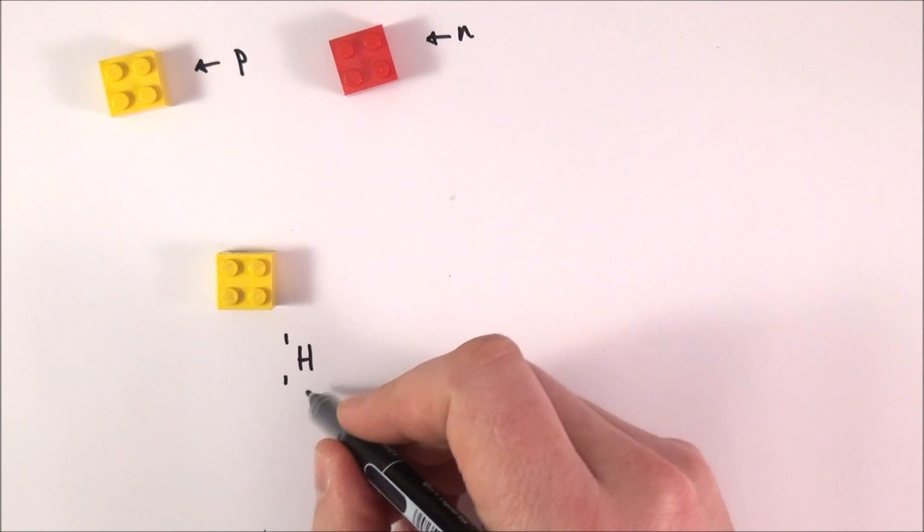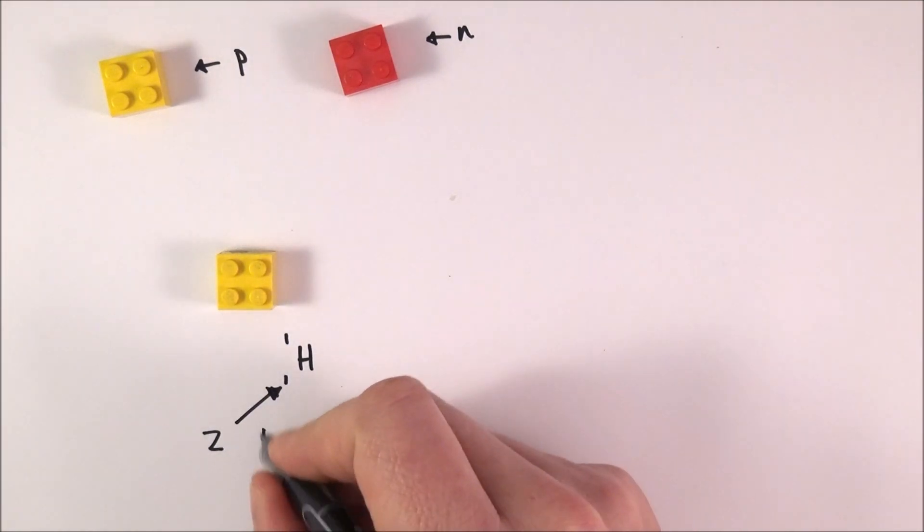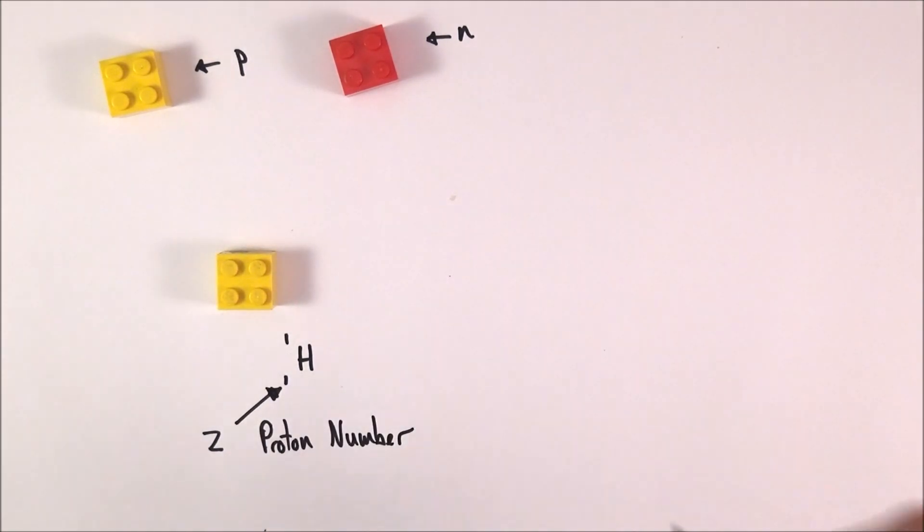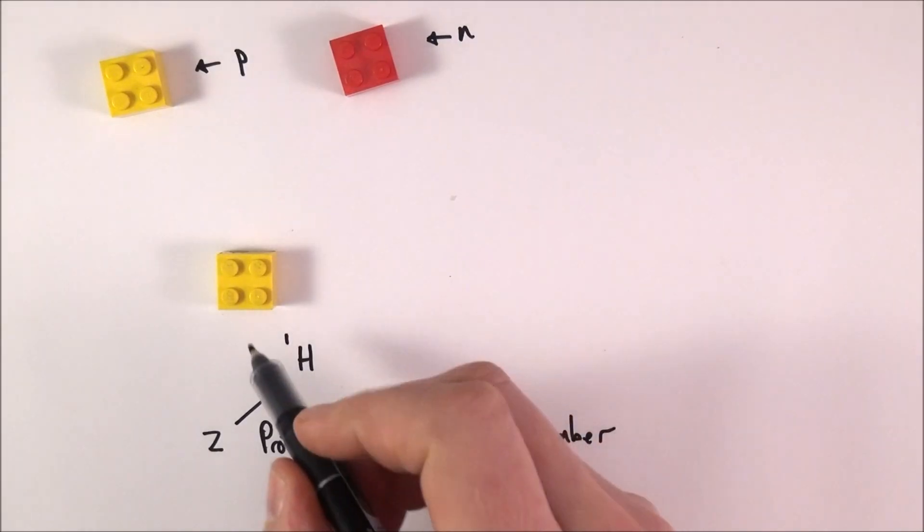The number at the bottom is called the Z number, and this can either be called the proton number or sometimes it's also referred to as the atomic number.